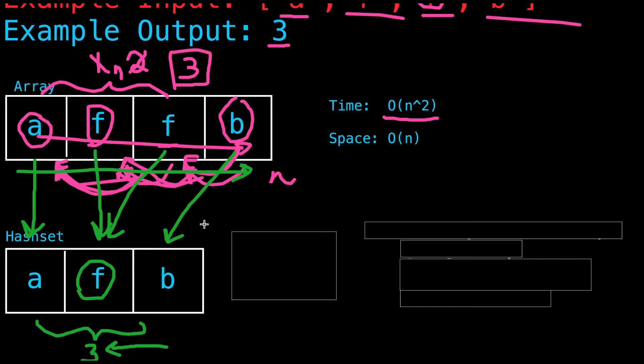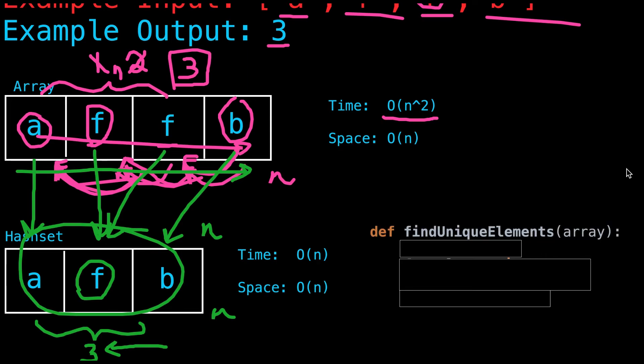And because we're storing the initial array, worst case scenario, our space complexity will also end up being N. So let's quickly take a look at the code we need to put this into action.